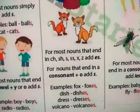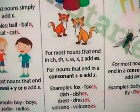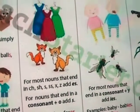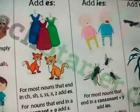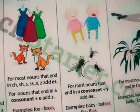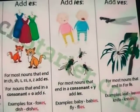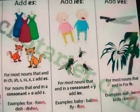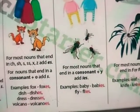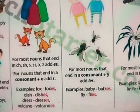Now we move on to adding -IES. What are the situations where we can add -IES? Most nouns that end with a consonant followed by -Y — we can add -IES.